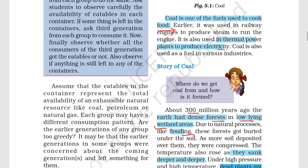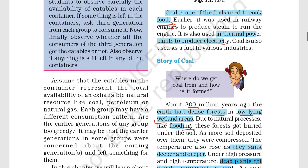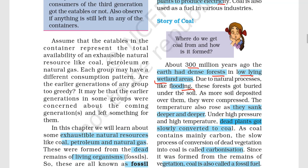Due to natural processes such as flooding, whatever forests existed were slowly buried in the soil. Layer after layer, more soil came on top, and the temperature increased. They sank deeper and deeper into the soil, and as they went down, the pressure and temperature both increased. With a lot of pressure and heat, these plants were slowly converted into coal.